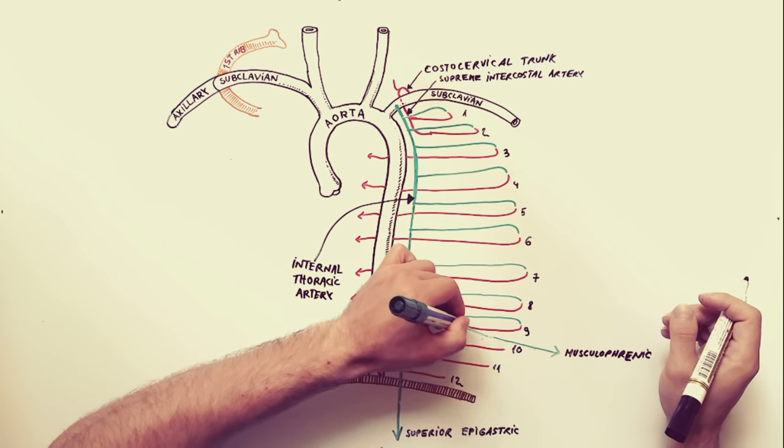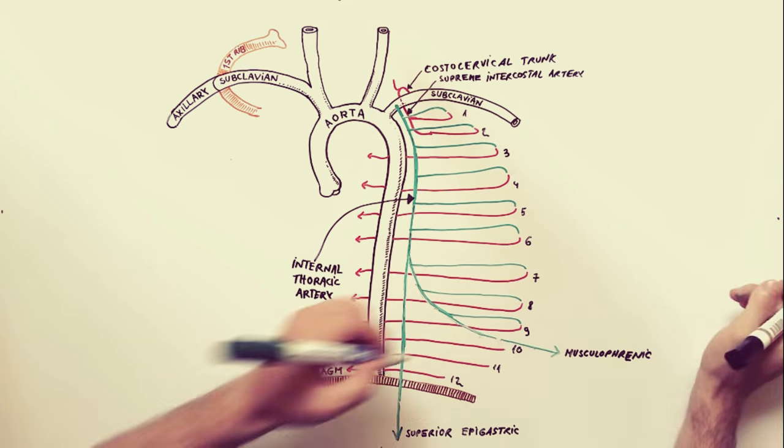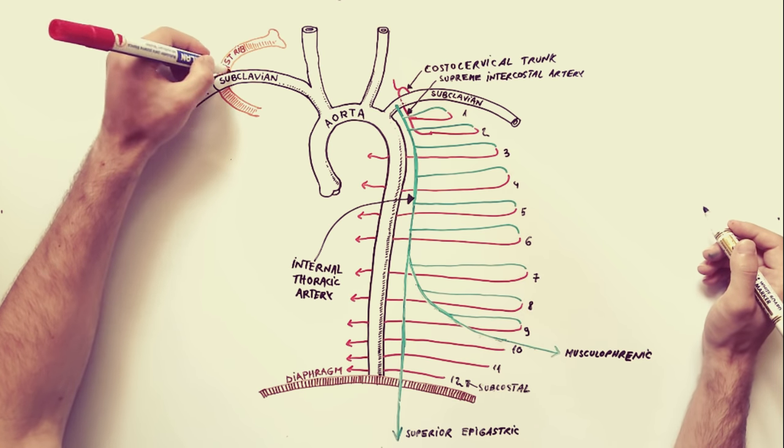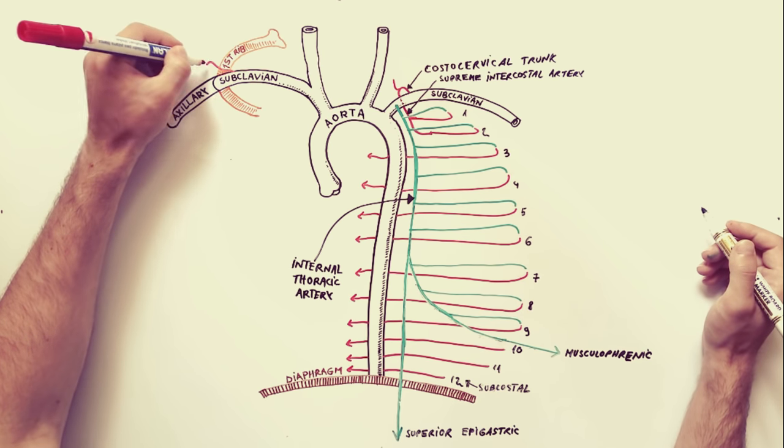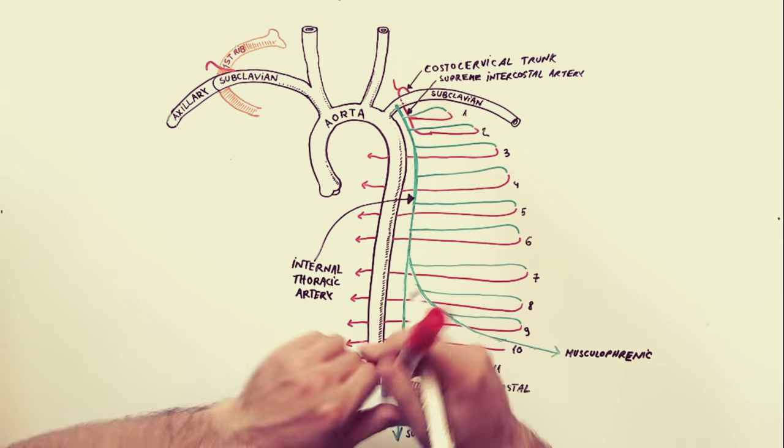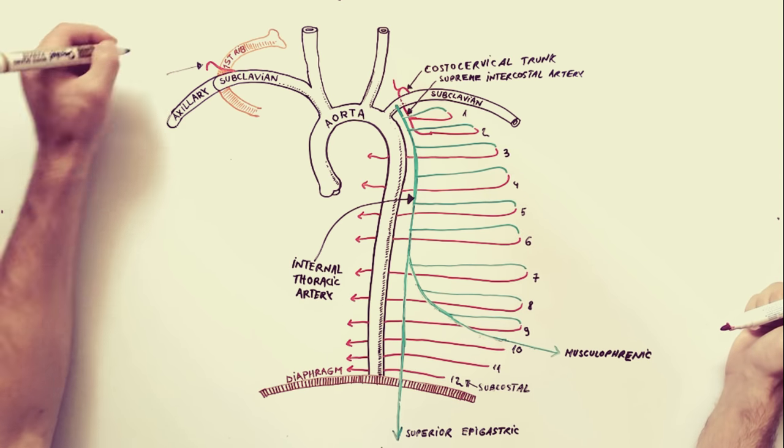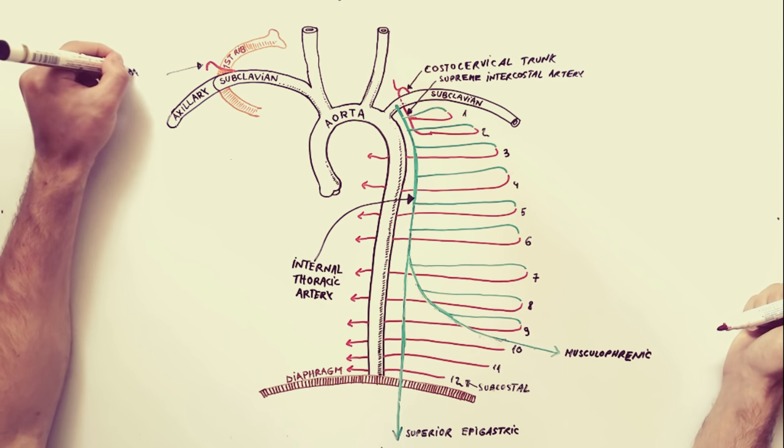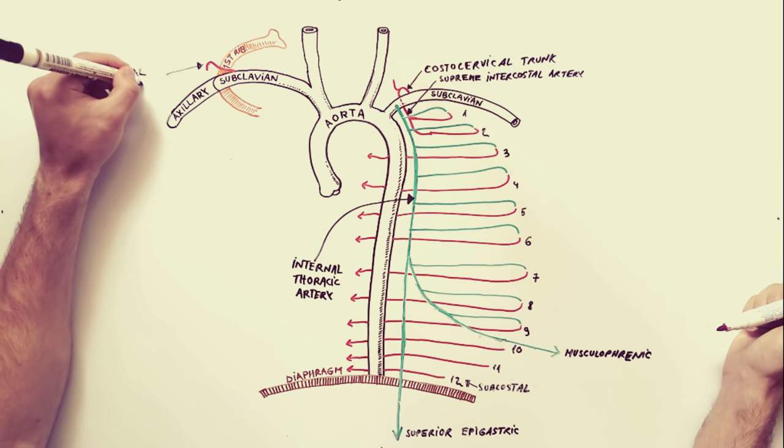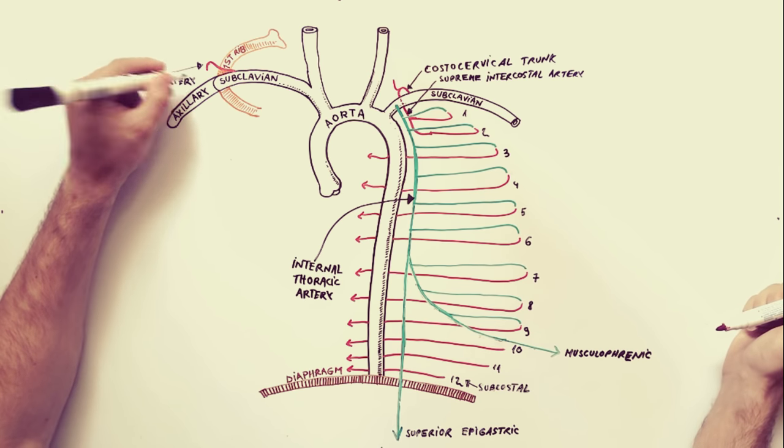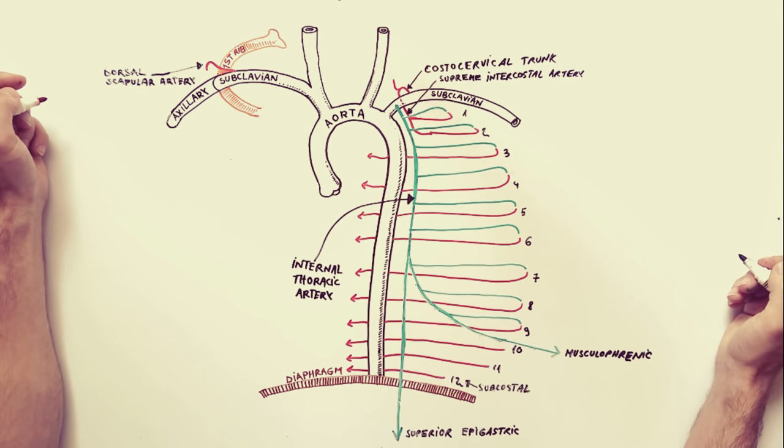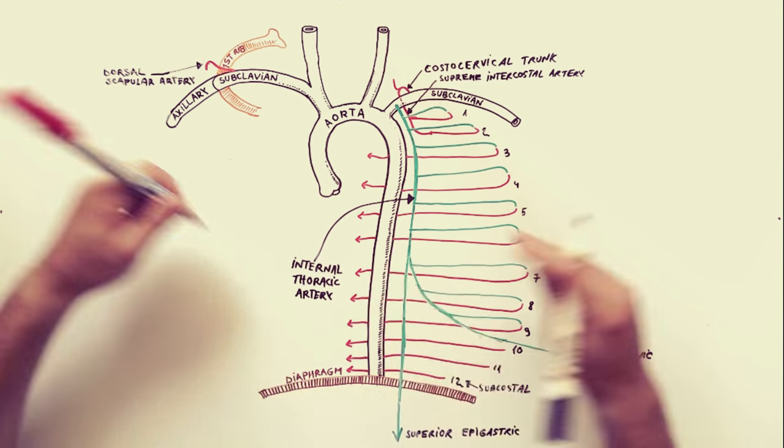Another branch from the subclavian artery, which participates in supplying the thoracic wall, is the dorsal scapular artery. This artery usually arises from the subclavian artery, from the third part of the subclavian artery.